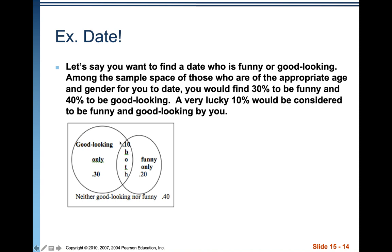Then figure out good-looking only and funny only. The whole circle for good-looking must add up to 0.40, so subtracting 0.10 gives 0.30 for good-looking but not funny. From the 30% funny, subtract the 10% who are also good-looking, leaving 0.20 funny only. For neither good-looking nor funny: add 0.30 + 0.10 + 0.20 = 0.60, subtract from 1, getting 0.40.